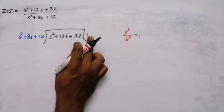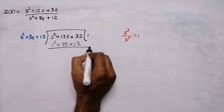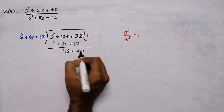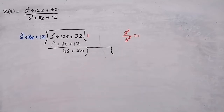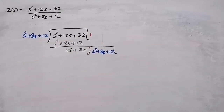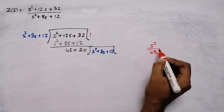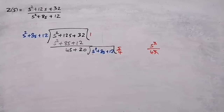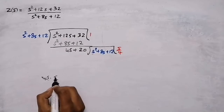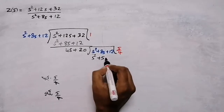Now divide again with the divisor s² + 8s + 12. Take the first term: s² divided by 4s gives s/4. Multiply: 4s × (s/4) = s², and 20 × (s/4) = 5s. Subtracting: s² − s² = 0, 8s − 5s = 3s, remainder is 3s + 12.